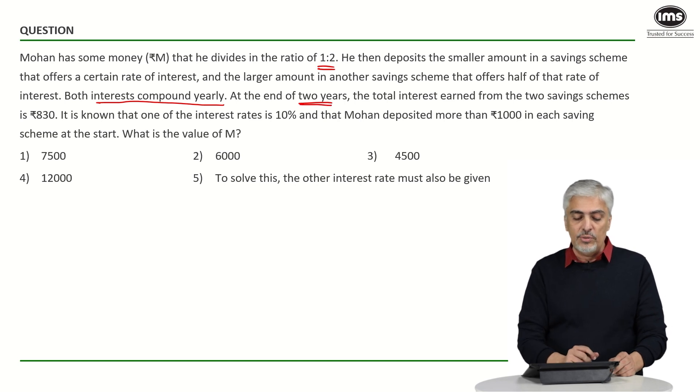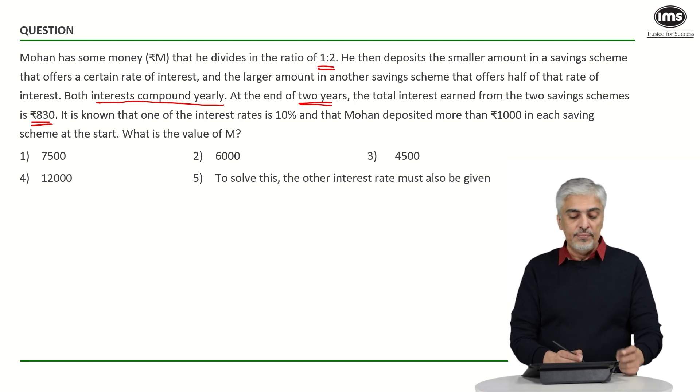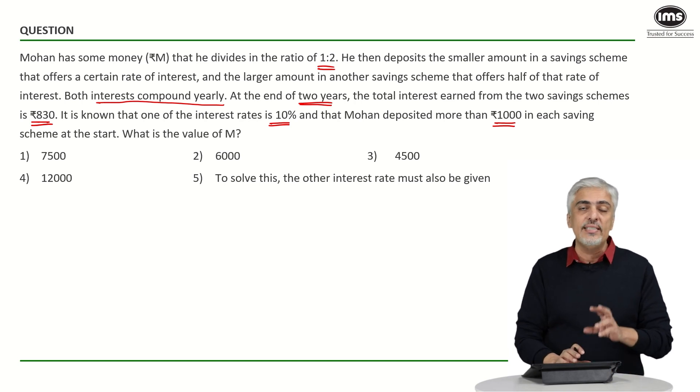the total interest earned from the 2 savings schemes is 830. So, the total interest earned is 830 rupees. It is known that one of the interest rates is 10% and then Mohan has deposited more than 1000 rupees in each of the schemes, which means I will have to take minimum 1000 rupees he has put in both the schemes.